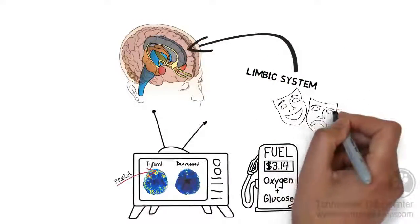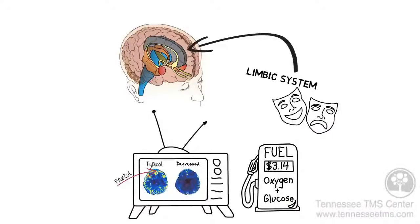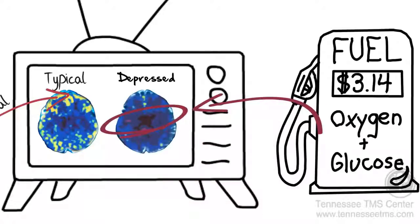In the individual with depression, you could say that the limbic system is way out of practice. This is demonstrated by the area being darker because it's not using the fuel, glucose, or oxygen.